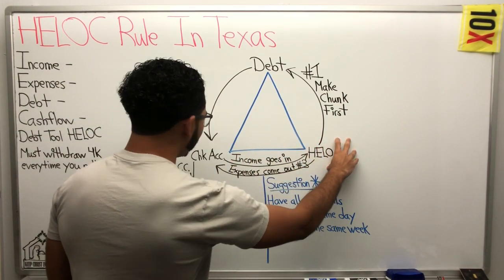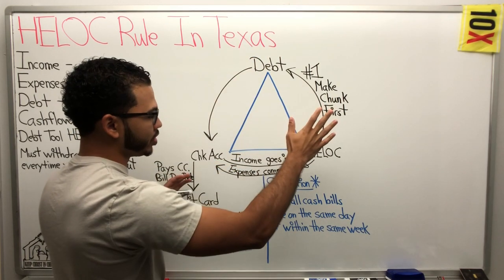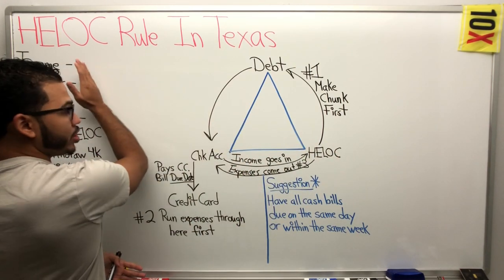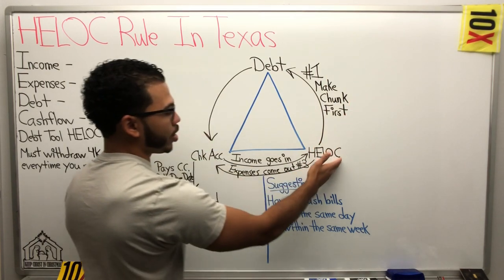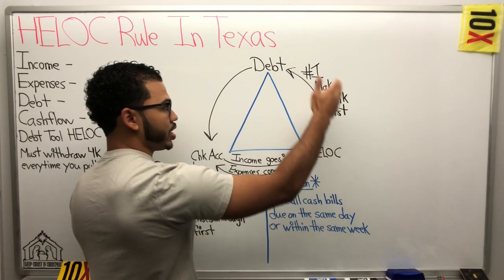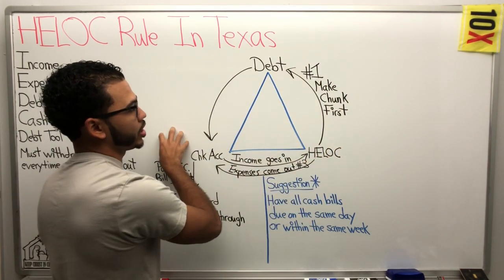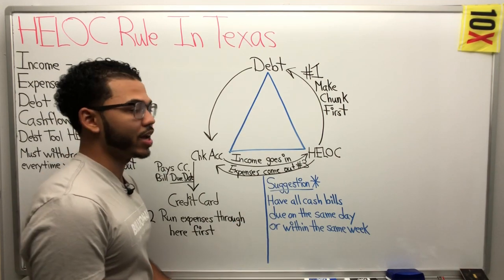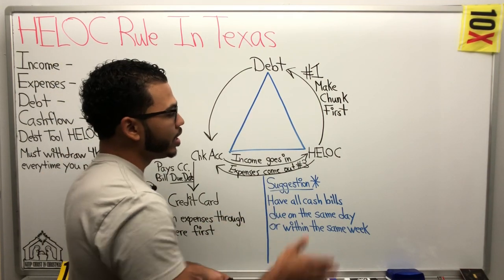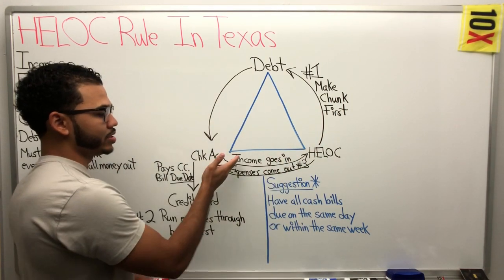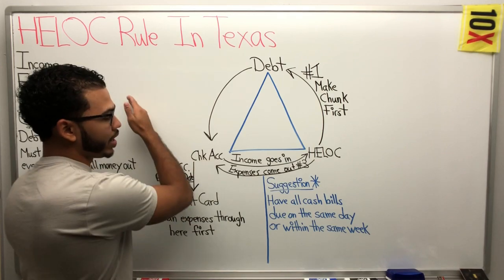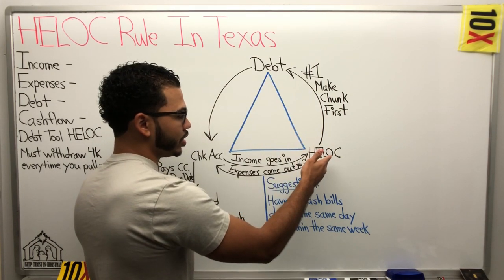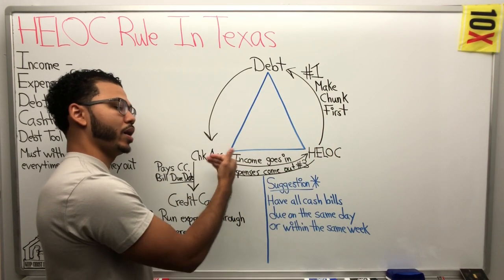You got your HELOC over here, you got your checking account, and the debts that you want to pay off — we're trying to do velocity banking. The very first step is we make our chunk. Based on your numbers, we determine what your chunk is going to be coming out of the HELOC. So step number one, money comes out of the HELOC to the checking account. The checking account makes a chunk payment towards the specific debt that we want to pay off, which is going to increase my cash flow and save me a bunch of money on interest. Now I'm in debt over here on the HELOC. My very next step: in the checking account, when my income comes in, all of it goes into the HELOC. And now the third move is money needs to come out to pay my bills.